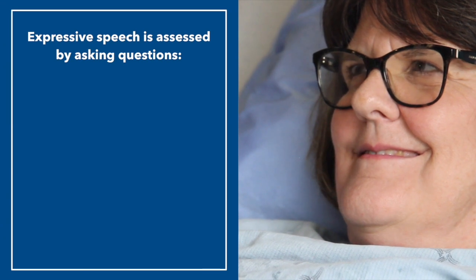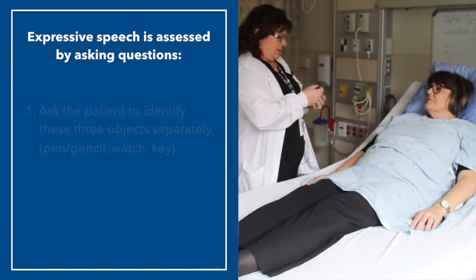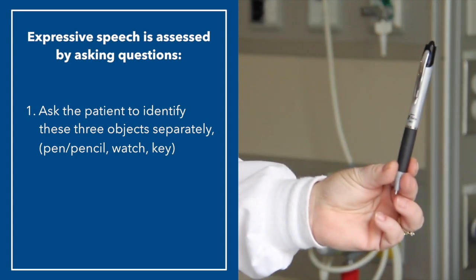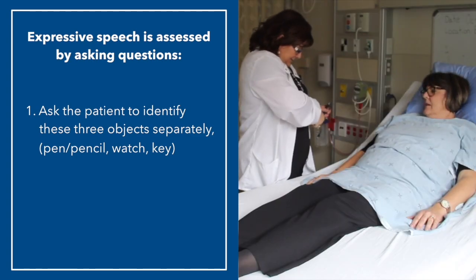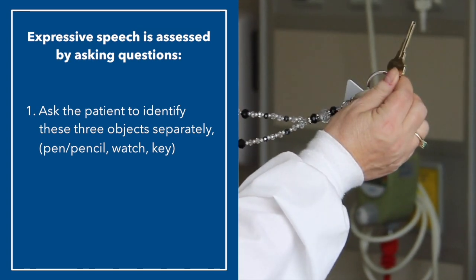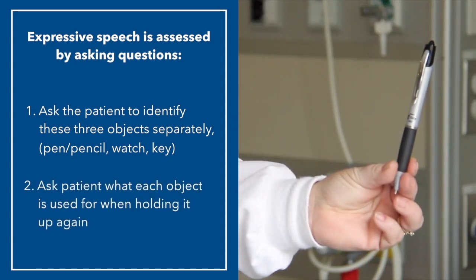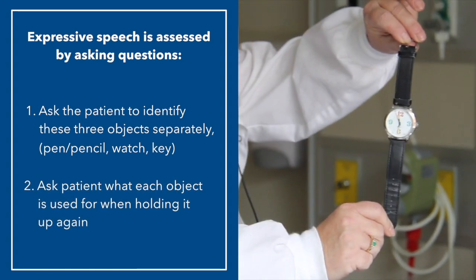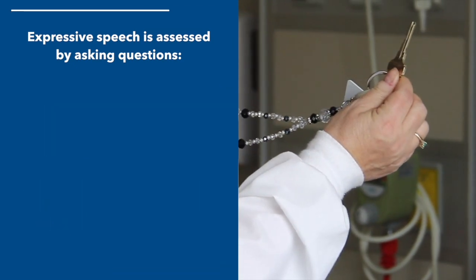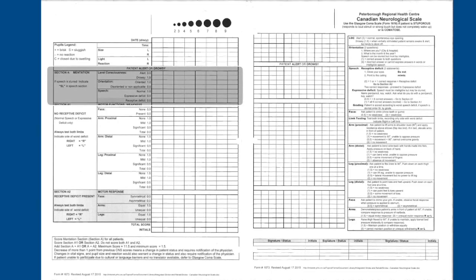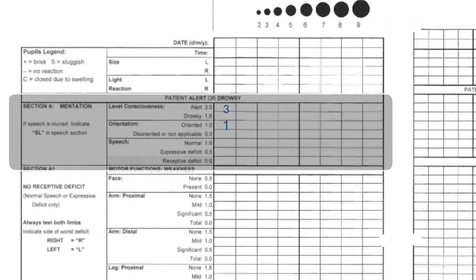Expressive speech is assessed. The nurse asks: 'Dorothy, can you tell me what this is?' Patient: 'It's a pen.' Nurse: 'And this?' Patient: 'A watch.' Nurse: 'And this?' Patient: 'A key.' The nurse then asks what each item does — the patient correctly answers 'It writes,' 'Tells time,' and 'Unlocks a door.' The patient responded appropriately, so there is no expressive deficit. Note: if the patient's speech is slurred but intelligible, score normal speech and record SL along with the score. Slurred speech is not considered an expressive deficit.